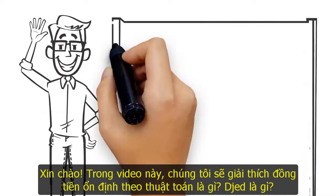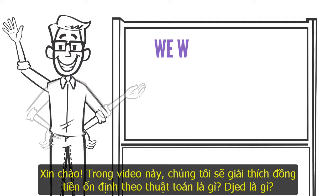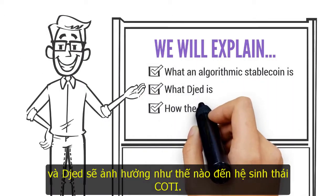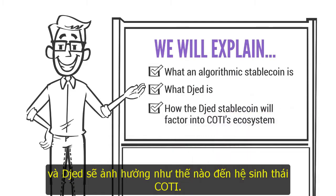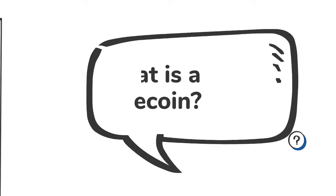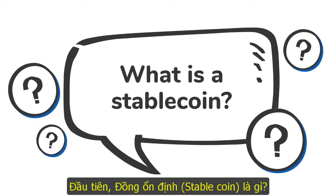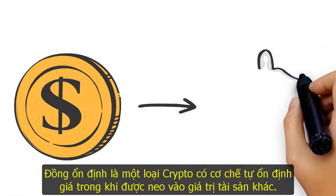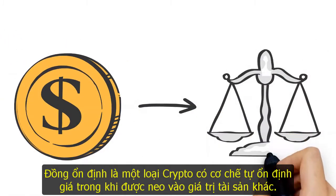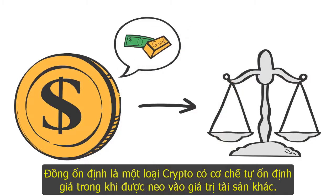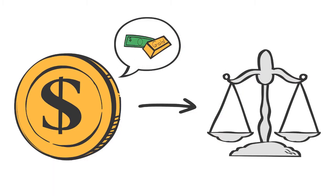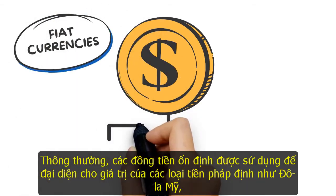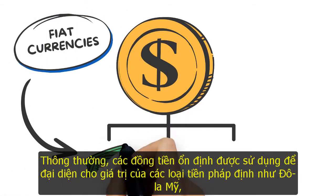In this video we will explain what an algorithmic stablecoin is, what Djed is, and how the Djed stablecoin will factor into Coti's ecosystem. A stablecoin is a type of cryptocurrency that has a mechanism to stabilize its own price while being pegged to other asset values. Most commonly, stablecoins are used to represent the value of fiat currencies such as the US dollar.